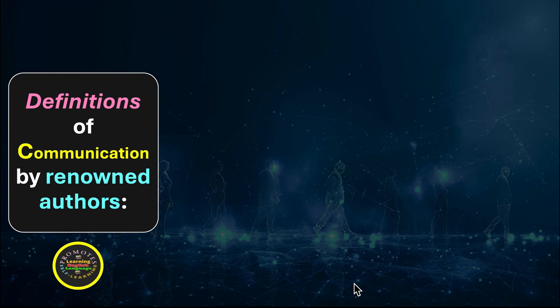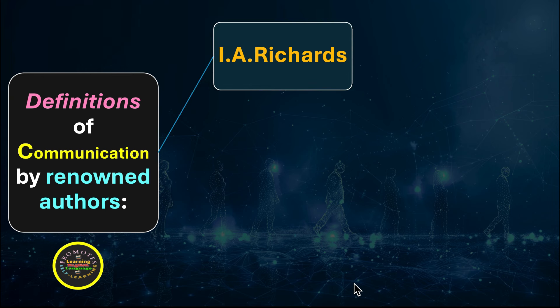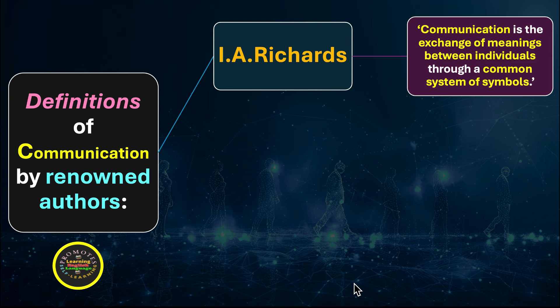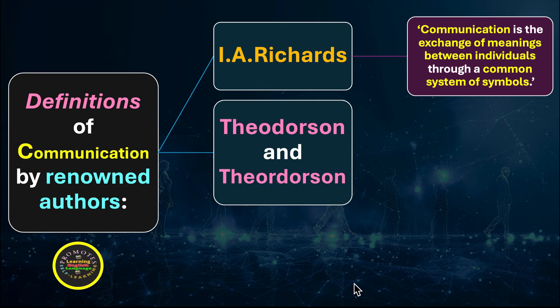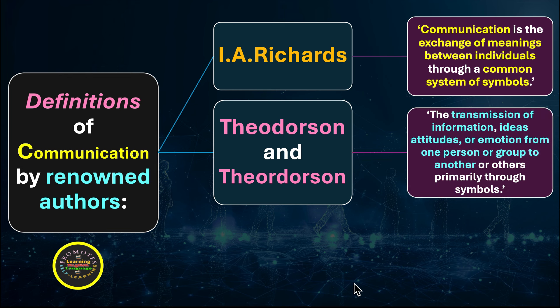Now we have definitions of communication given by renowned authors. The first is I.A. Richards, who defines communication as 'the exchange of meanings between individuals through a common system of symbols.' According to I.A. Richards, we must have a common system of symbols through which we can exchange our meaningful ideas. Next, Thotson and Thotson define communication as 'the transmission of information, ideas, attitudes, or emotion from one person or group to another, primarily through symbols.'